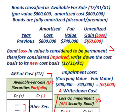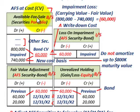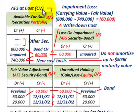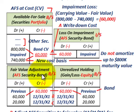With impairment, you write down the cost basis to the new level at 12-31-X1. For available-for-sale securities — which would normally include a portfolio — you record them on the balance sheet at cost, in this case at the bond's carrying value. Along with the available-for-sale securities account, you maintain a fair value adjustment account that adjusts securities up and down based on fair value at each reporting period. Any fair value adjustments are recorded as unrealized gains or losses in equity on the balance sheet.